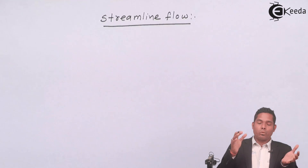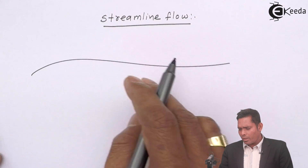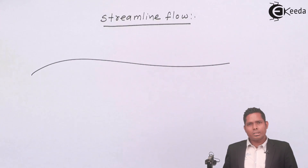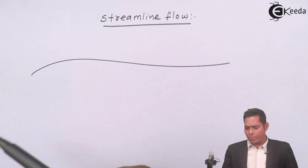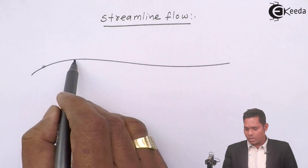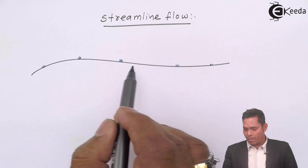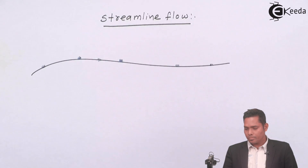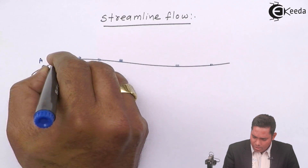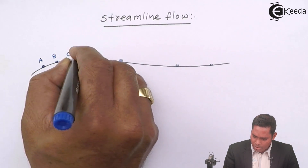The particles will flow along a path. For example, if I draw a path along which the fluid — say water particles — are moving in a certain direction, these water particles are moving and following this path. Suppose this point is A, this particle is B, this particle is C, and this particle is D. I consider four particles.